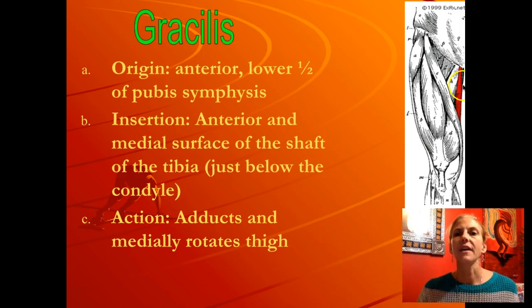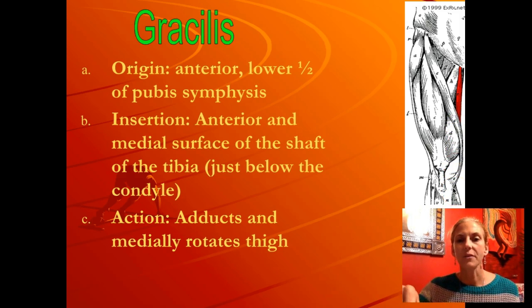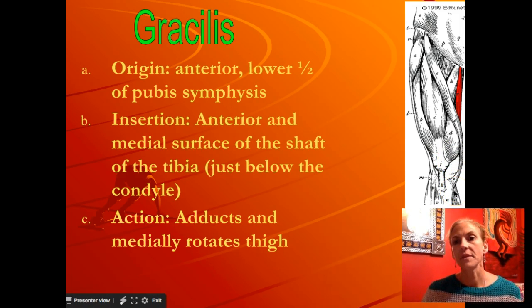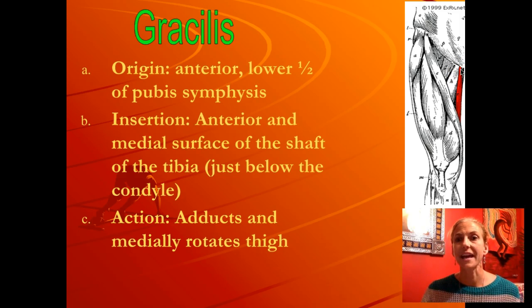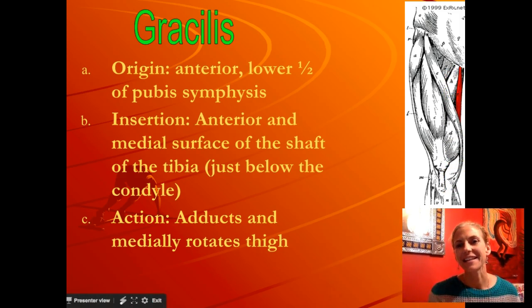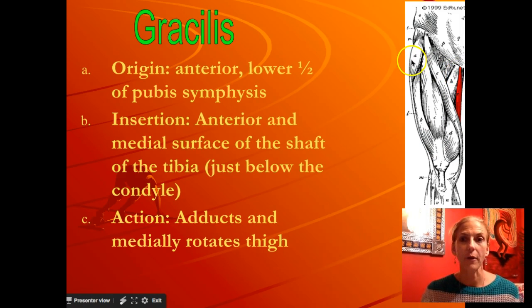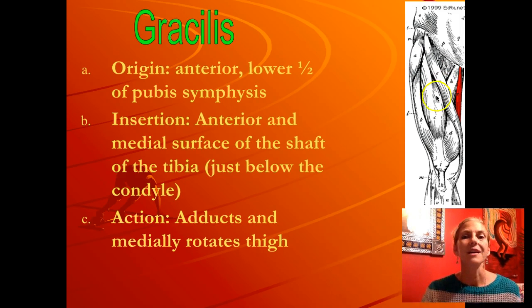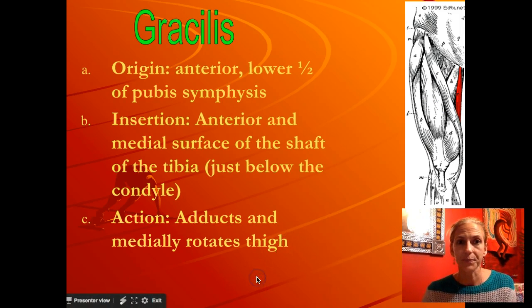The gracilis is right here — a lot of people think of it as the groin, kind of like the inseam of your jeans. It starts on the pubis, runs behind these muscles, and inserts down here on the tibia underneath the condyle — the condyle being a knuckle-like projection at the proximal end of the tibia. Pulling that line from the tibia to the center of the pelvic girdle pulls the leg to the midline — that's adduction. At the same time, because it's pulling from a midpoint rather than a lateral point, it causes a medial rotation of the thigh, rolling it inward — the opposite of what the glutes do.